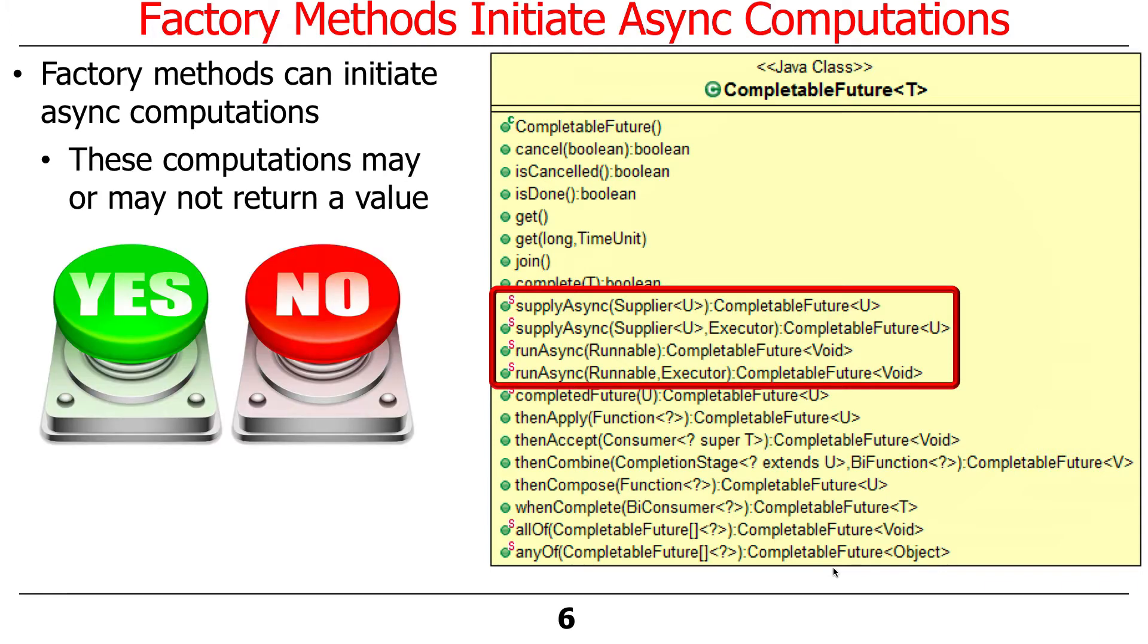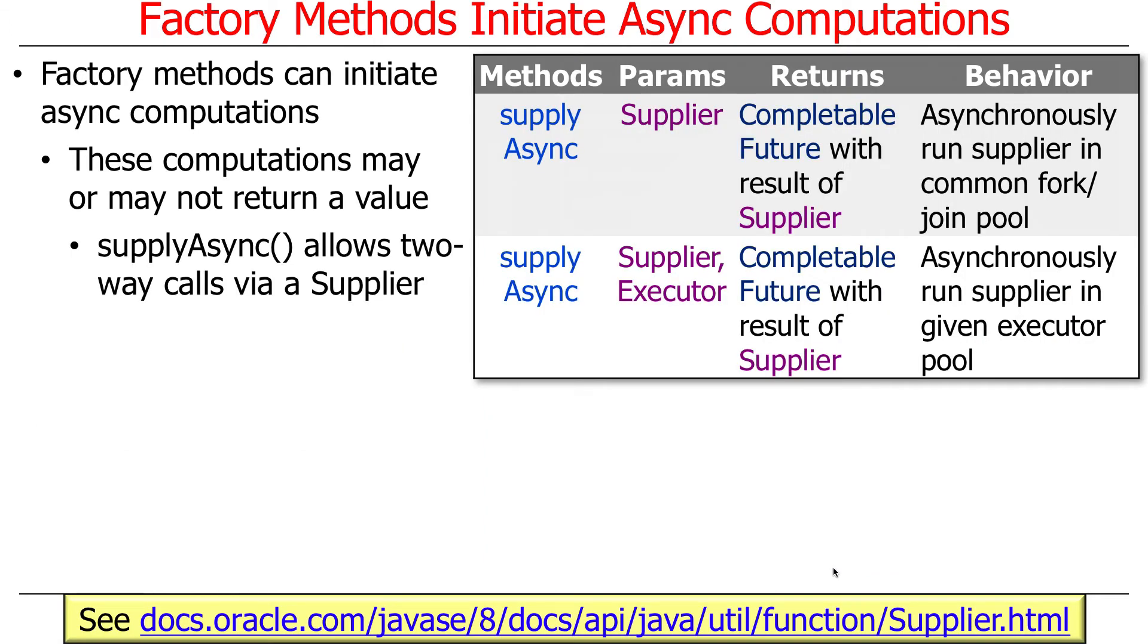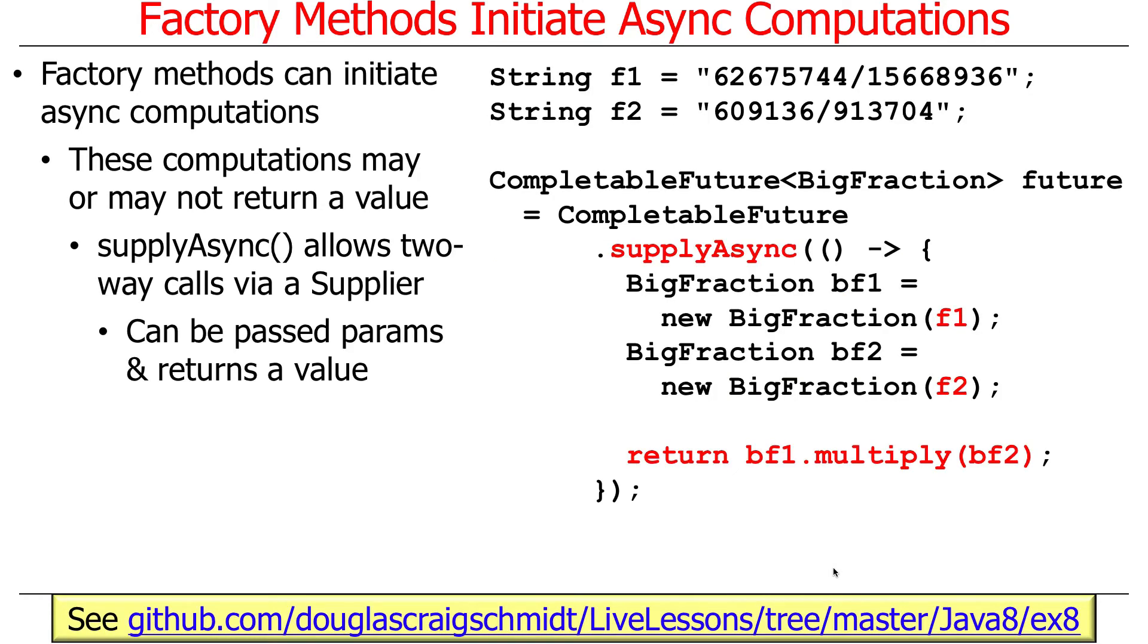These four methods can be split up a couple different ways. One way you can split them up is, do they return a value or not? Or do they just run computations in the background that are expected to have some kind of side effect? Some of the methods return values, in particular the ones called supply async. There's a pair of methods called supply async, and these allow two-way calls that return values. They take a supplier that will be the thing that provides the information, and then they return a completable future to whatever the result is. The nice thing about this is it allows you to pass parameters to the call and also get a value back. So it's essentially a two-way call.